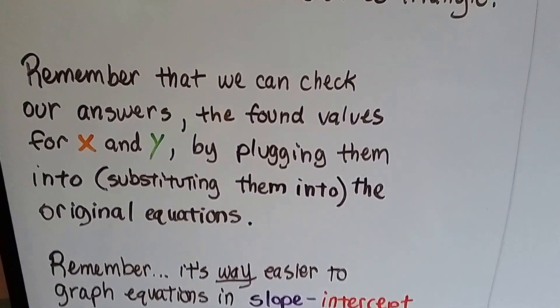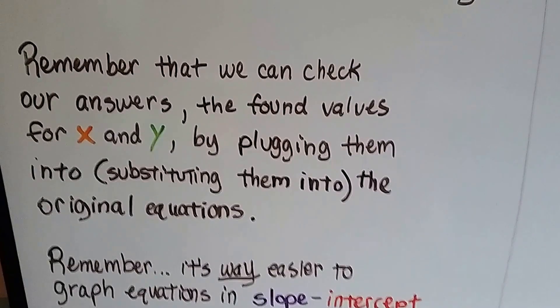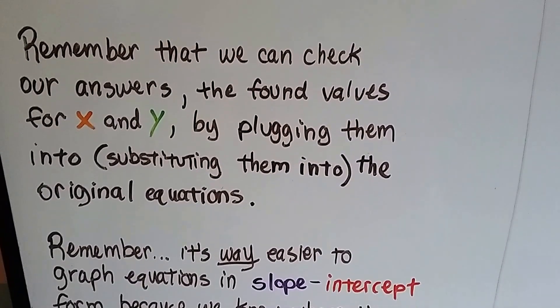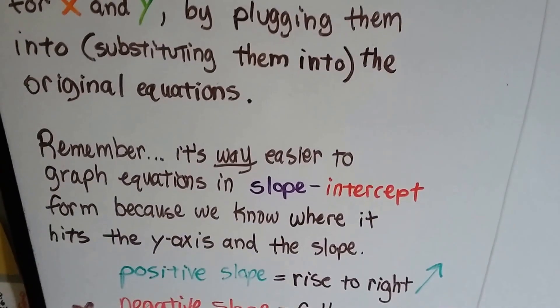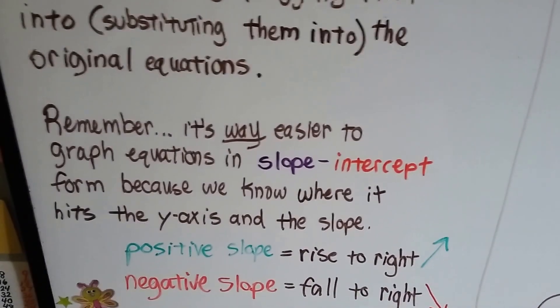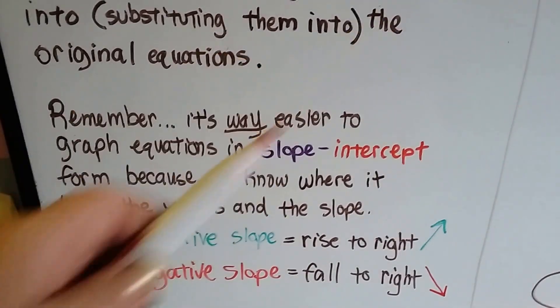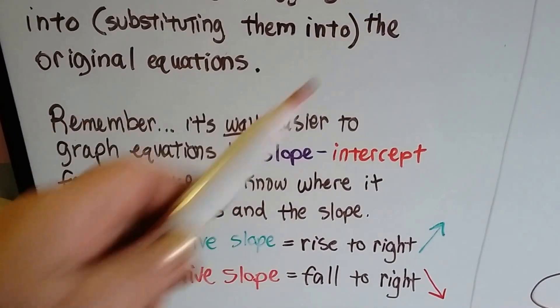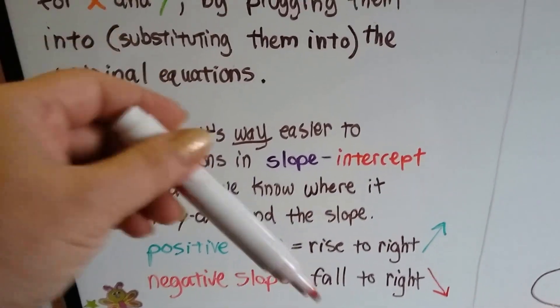Now remember, we can check our answers, the found values for x and y, by plugging them into the original equations, substituting them into them. And remember, it's way easier to graph equations in slope-intercept form because we know where it hits the y-axis and the slope. And remember, a positive slope rises to the right. The line rises to the right. And with a negative slope, the line falls to the right. I'm going to get that drilled into your head.